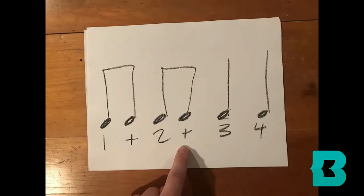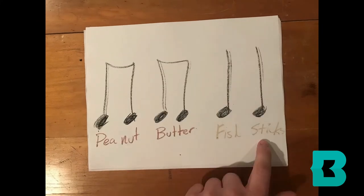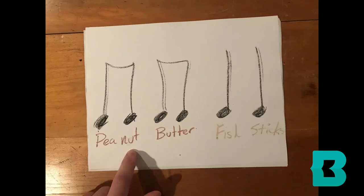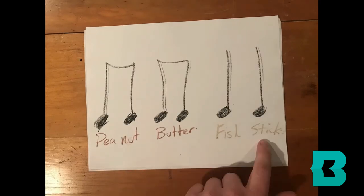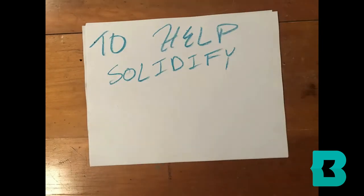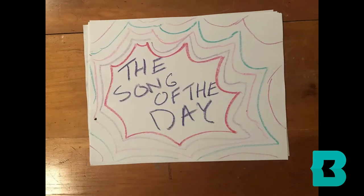One, and two, and three, four. Peanut butter, fish, sticks. One, and two, and three, four. Peanut butter, fish, sticks. Doesn't this make learning rhythm a little easier? And to help solidify this, we have the song of the day. Hit it.